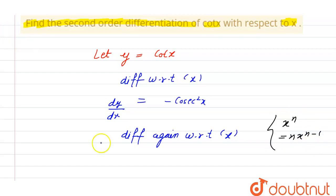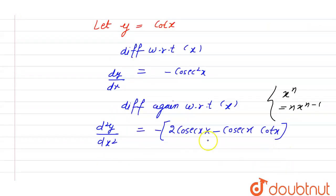d²y/dx² equals minus. So, power will shift to coefficient: 2 cosec x into differential of cosec x, which is minus cosec x cot x, and differentiation of x will be 1.